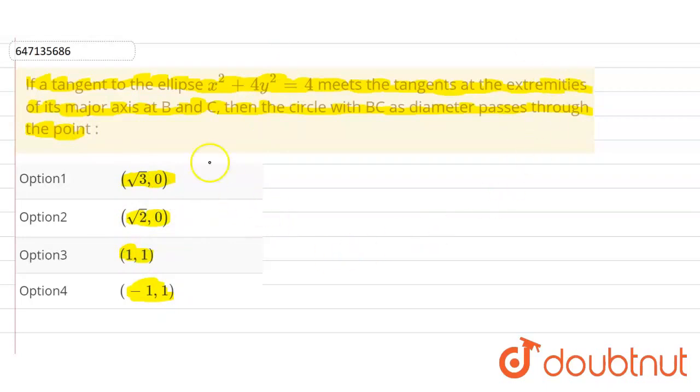So basically, in this question we have a tangent to an ellipse. The ellipse equation is given. The tangent meets at the extremities of the ellipse major axis. The points are B and C. We have to find the circle with BC as diameter, and determine which point it passes through. So, first of all, we will explain this thing as a figure.